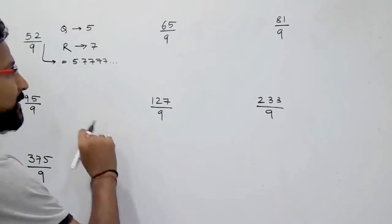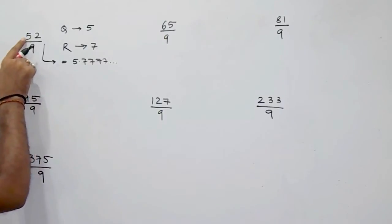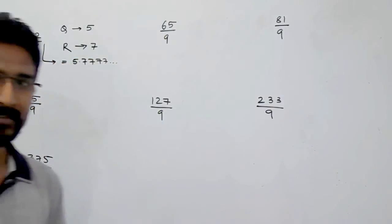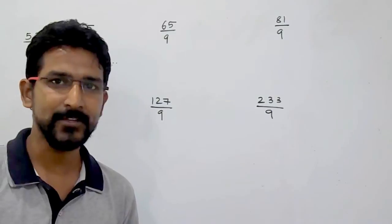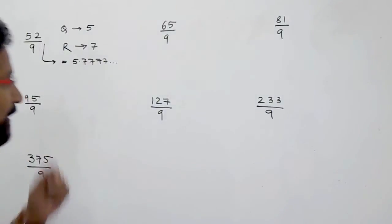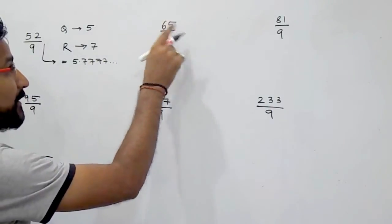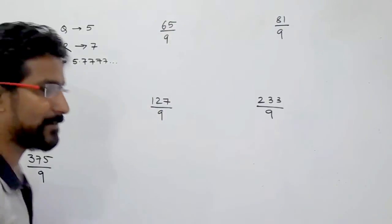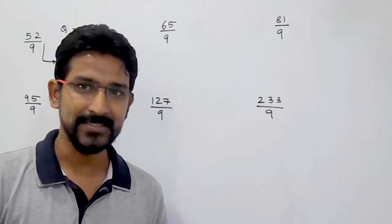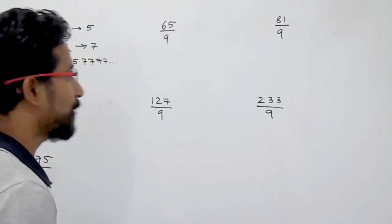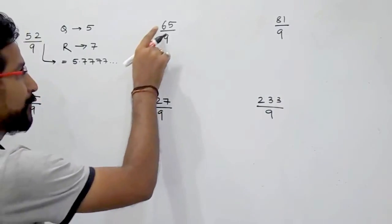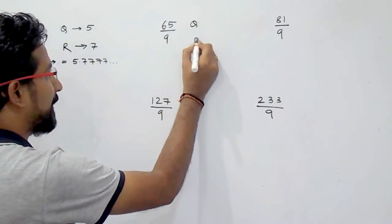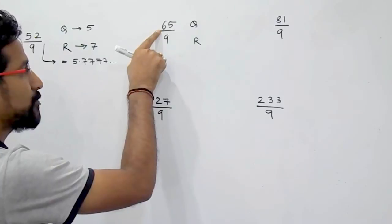Now notice: when we added 5 plus 2 for the remainder, it was less than 9, so there is nothing more to do. But when you get a number greater than 9 — for example, 6 plus 5 that is 11, which is greater than 9 — then what do you have to do? First, for the quotient and for the remainder, let's look at what happens.